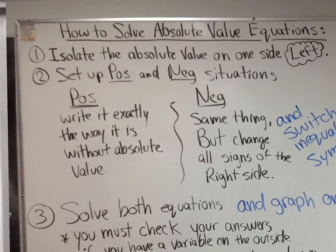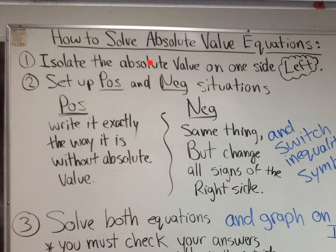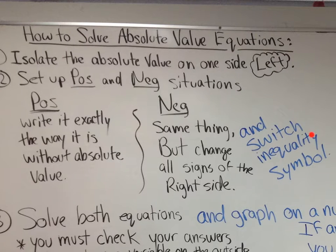You're going to start by isolating the absolute value on one side, and it would be a good idea to get it on your left side. That's step one. Step two is to set up your positive situation and your negative situation. The positive situation, you write it exactly the way it is without the absolute value symbol. The negative situation, same thing, but change all the signs of the right side. And this is the new added note to inequalities: switch the inequality symbol. So on the negative situation, you switch the inequality symbol and you change the sign of everything on the right side.